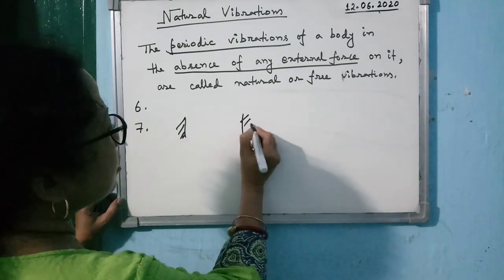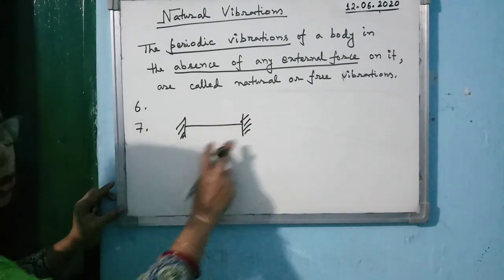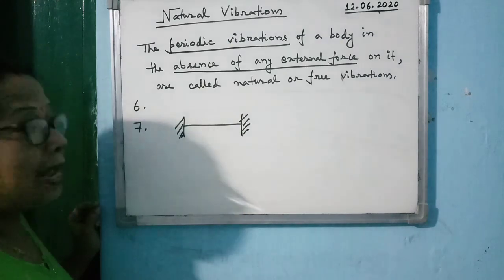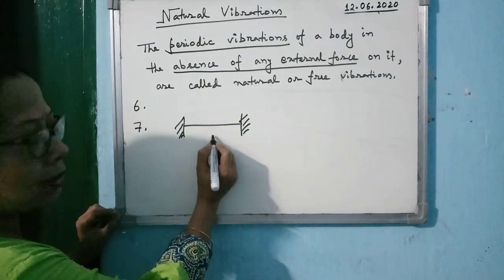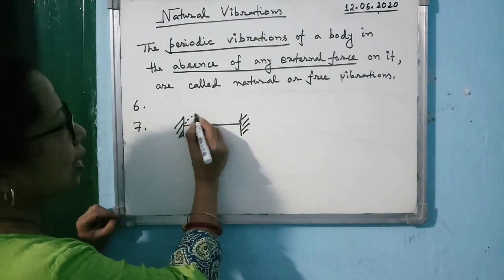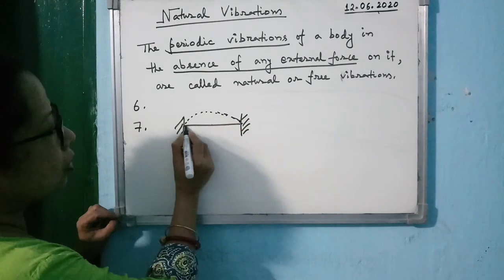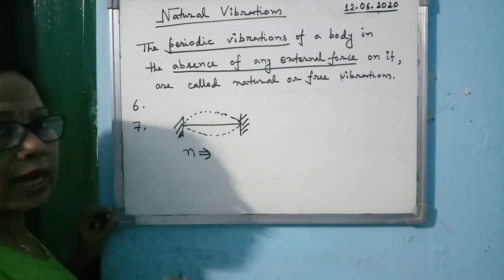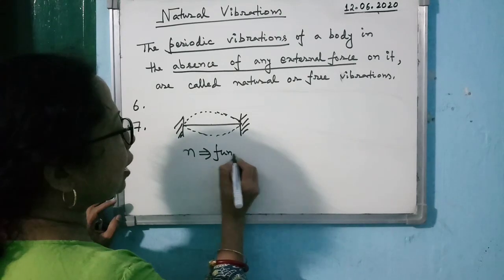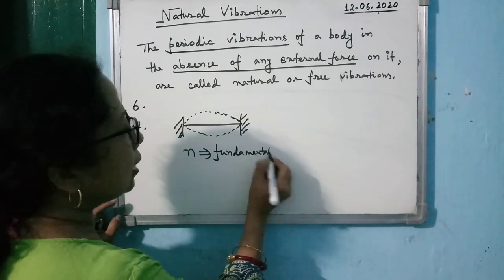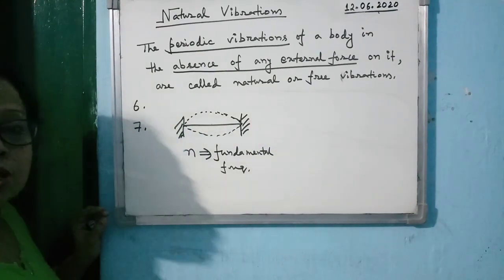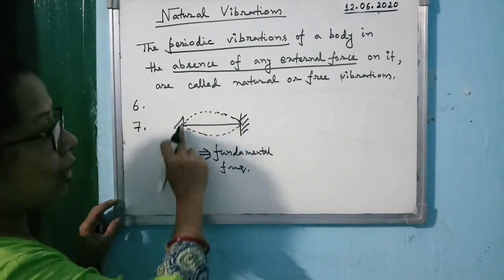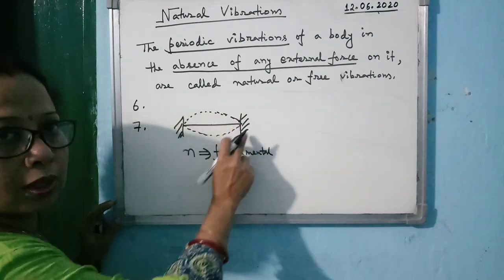The last example of natural vibration: suppose a string is fixed at two rigid ends. If you pluck the string in the middle, the string will vibrate in a specific mode. When the string vibrates forming only one loop, this is known as the fundamental mode of vibration, and the corresponding frequency is known as the fundamental frequency.